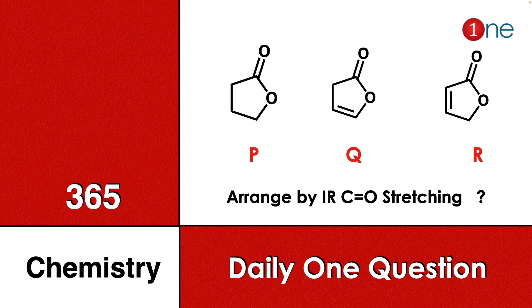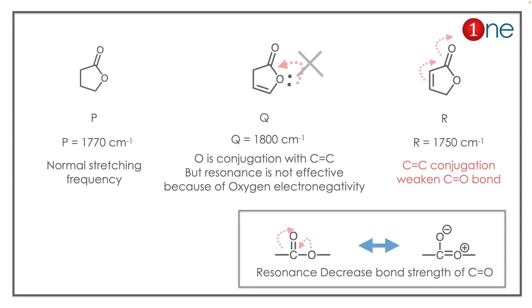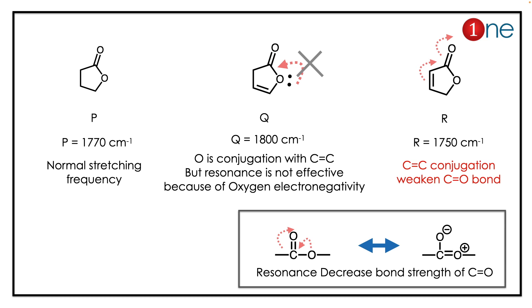R is a cyclic ester on the side. You have to arrange all three compounds by their C=O stretching frequency — you should know which one is higher and which one is lower. The answer lies in conjugation: the more the conjugation, the more charge transfer occurs.